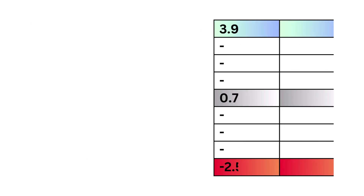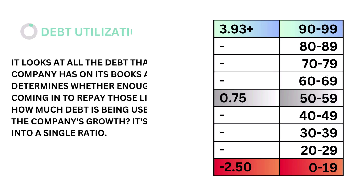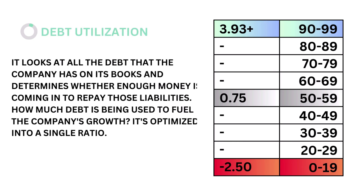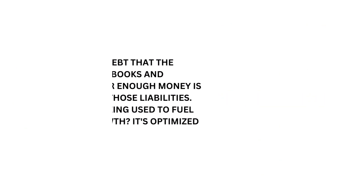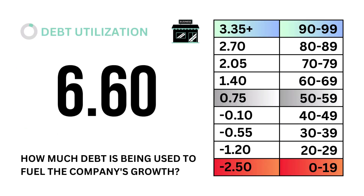Fourth, debt utilization. Debt utilization looks at all the debt the company has on its books and determines whether enough money is coming in to repay those liabilities, and how much debt is being used to fuel the company's growth. It's optimized into a single ratio. The models tell us that a debt ratio of 0.75% is considered average. Here's our debt utilization grade.